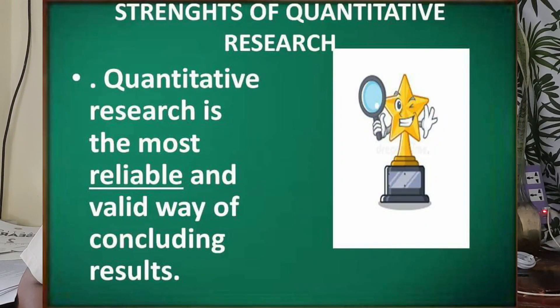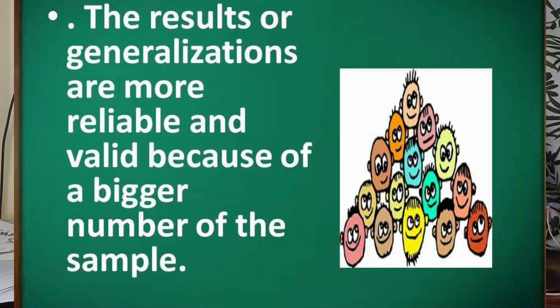The strengths of quantitative research: it is the most reliable and valid way of concluding results — reliable because of the numbers. For example, we have surveys and results on COVID-19 patients. The results of generalization are more reliable and valid because of the bigger number of samples. Using surveys and research methods, we can gather data from thousands, hundreds of thousands, or even millions of people — compared to qualitative research which is more on interviewing somebody or a small group of people.